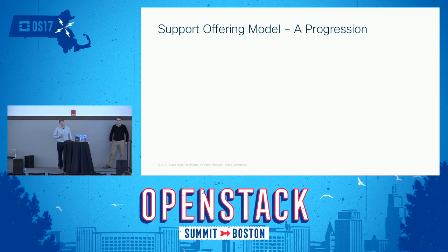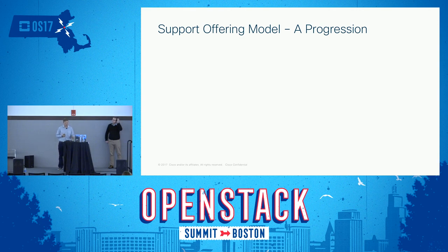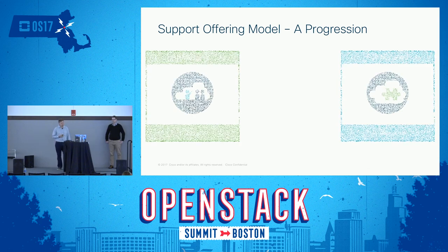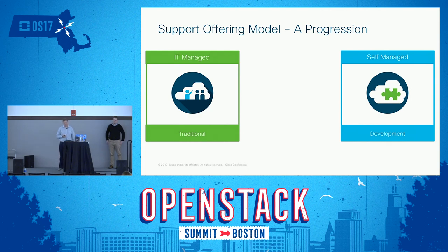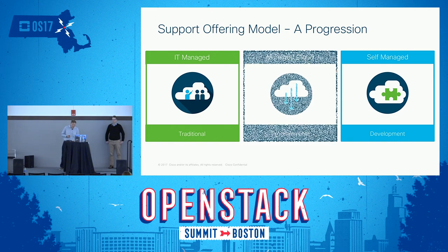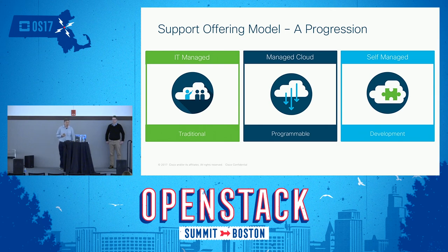Ultimately we're there as an infrastructure provider — we want to provide the needed resources for their applications. When clients come in, we want to give them different support offering models. This has been a progression. When we first started, we had self-managed as our first offering for our Express POC clients. Then as production applications came on board, we offered an IT-managed offering — more traditional IT infrastructure support. But as we've moved forward emphasizing programmability and APIs, we've come up with our new offering model called Managed Cloud, which is really focused on programmability.